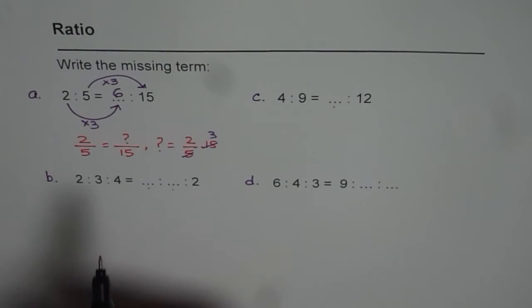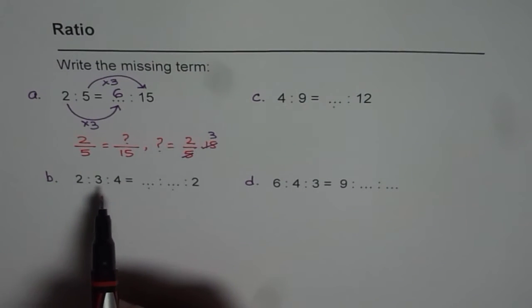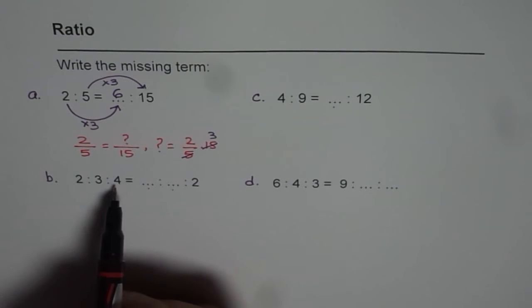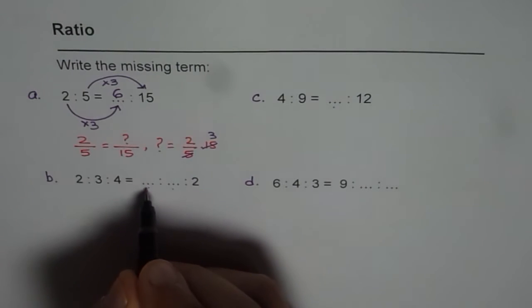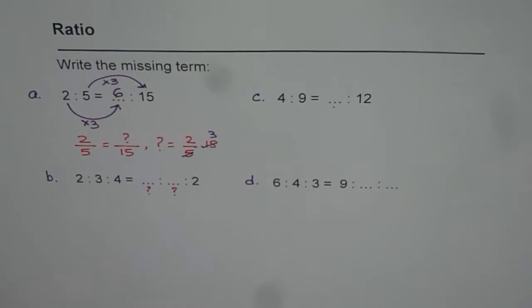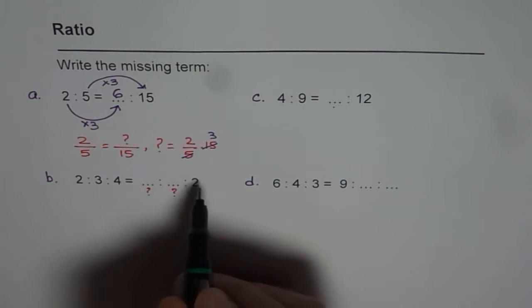Now sometimes in ratios we may have more than two numbers involved. Now here for example we have 2 is to 3 is to 4 equals to there are two missing spaces. So let me write question marks there. So let's go with the ratio of the known ratio.